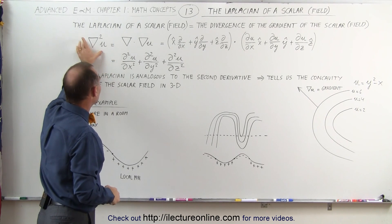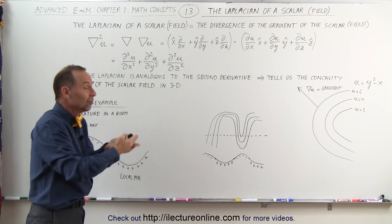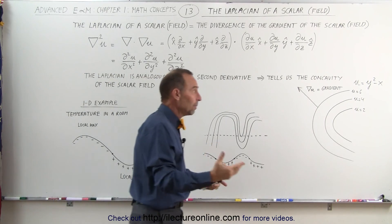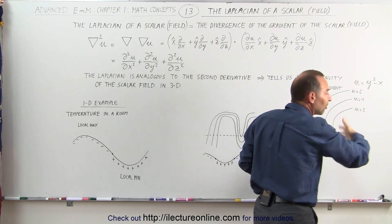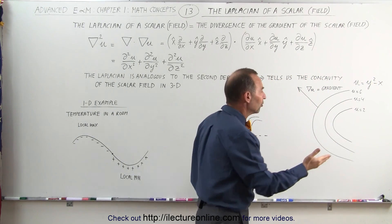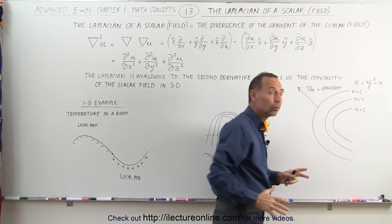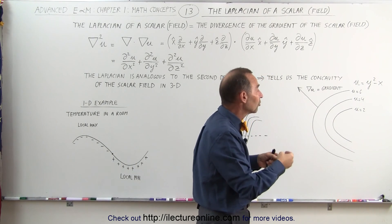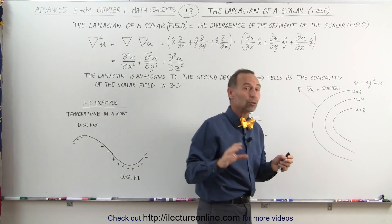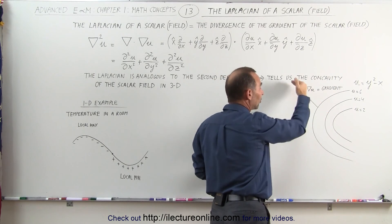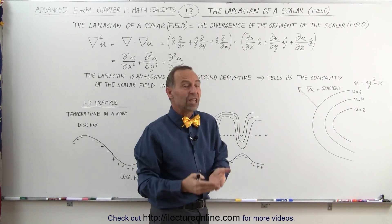In a shorter way of writing it, this is simply the second derivative with respect to x, y, and z of the scalar field. Using the same examples as before, here's our scalar field, which is y squared minus x, represented by these curves. These lines represent the regions in two-dimensional space where the value of the scalar field is constant — u equals 2 along this line, u equals 4, u equals 6.